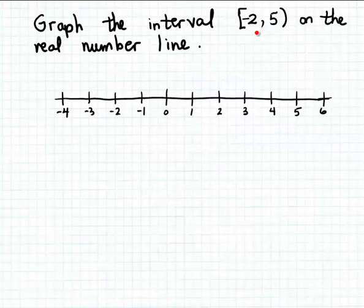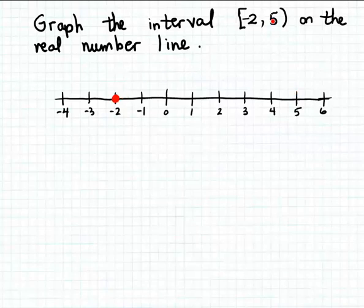Let's graph that set of numbers on the number line. This interval set begins at minus two, which is one of the boundary values, and minus two is included in the set. So let's put a closed dot at minus two to indicate that it is included, and extend the graph along the number line from minus two up to five.